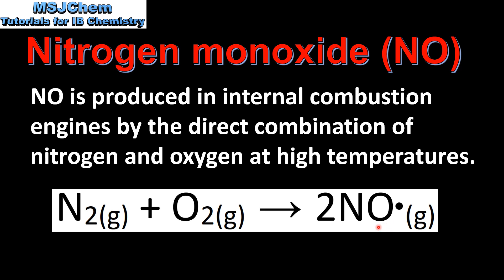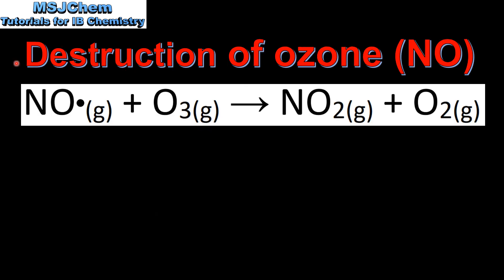Because it has an unpaired electron, the nitrogen monoxide molecule is a free radical, which makes it very reactive. Next we look at the destruction of ozone by the nitrogen monoxide molecule.